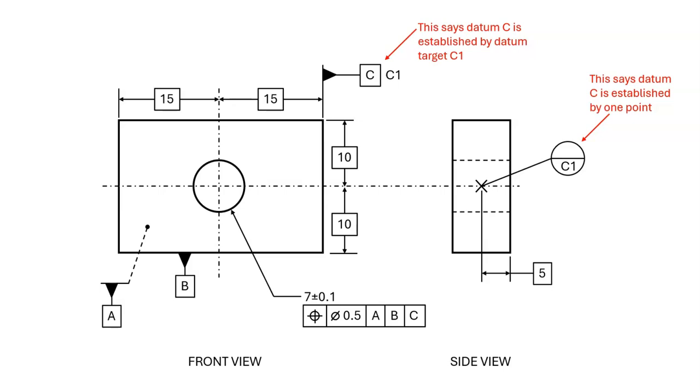Now the front view tells us that datum plane C is where the datum feature symbol is, but it also tells us that datum C is established by datum target C1.